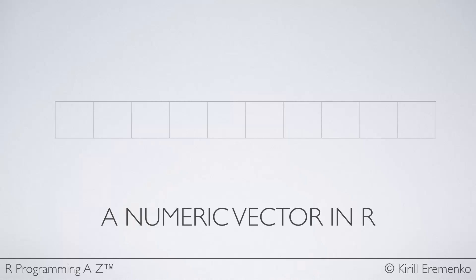The definition of a vector is a sequence of data elements of the same basic type. The way I imagine a vector is like a horizontal bookshelf with lots of sections and in each one of these sections you can put a number.